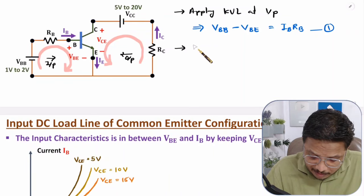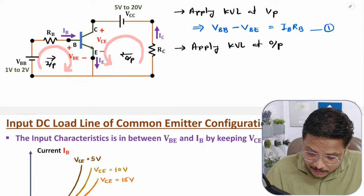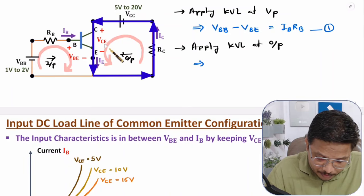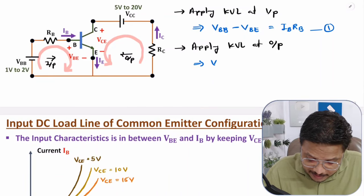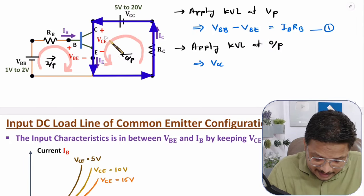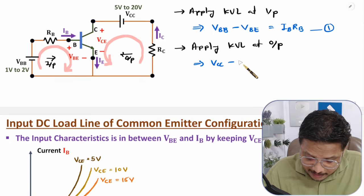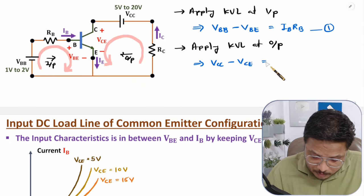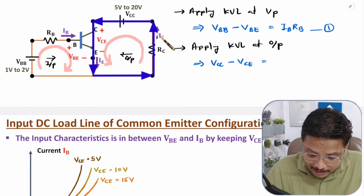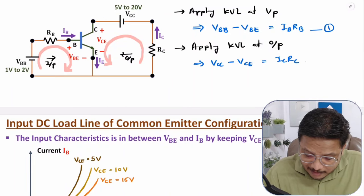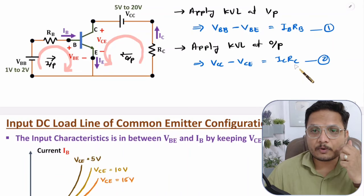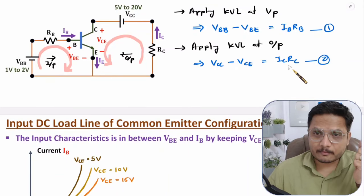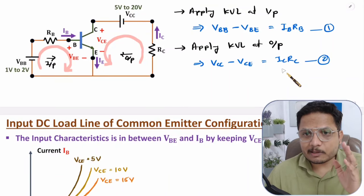To get the output equation, we apply KVL at the output loop. In this loop, VCC is positive, then minus VCE, and that equals IC × RC. So the output equation is VCC − VCE = IC × RC. This is the second equation. We now have two equations — one for input and one for output — which we will use to identify the DC load line and Q point.